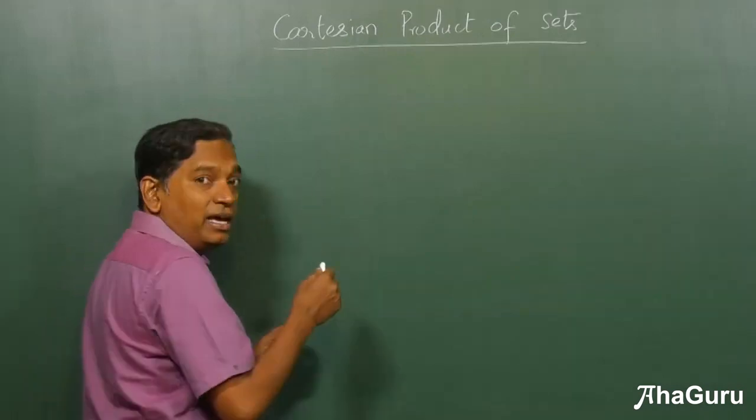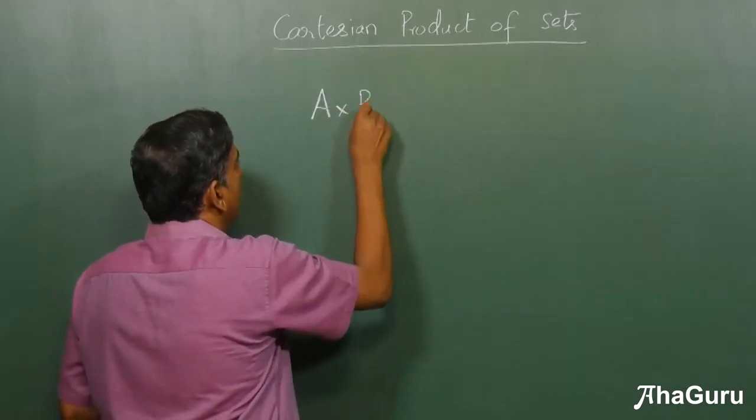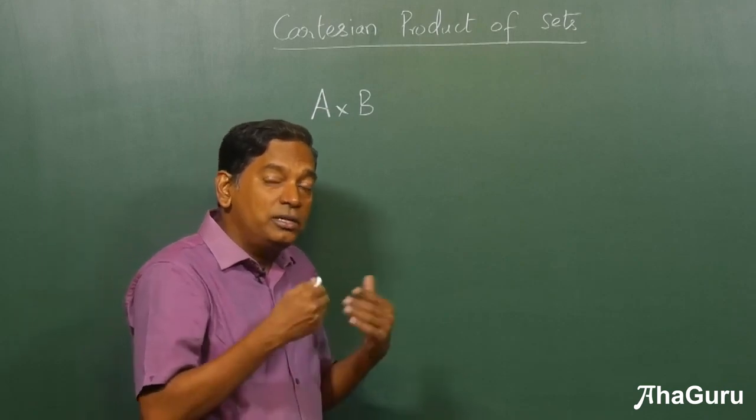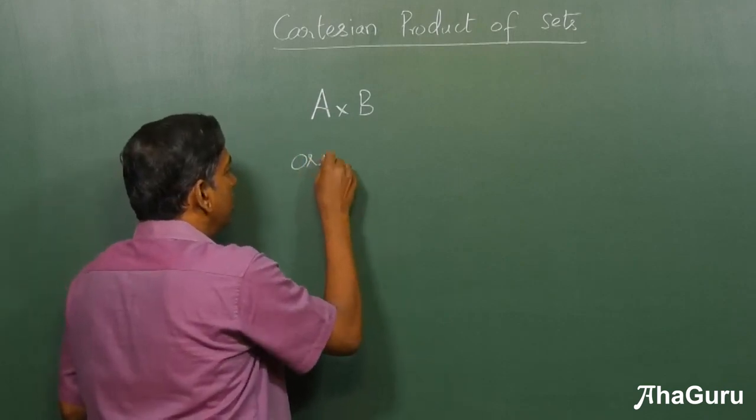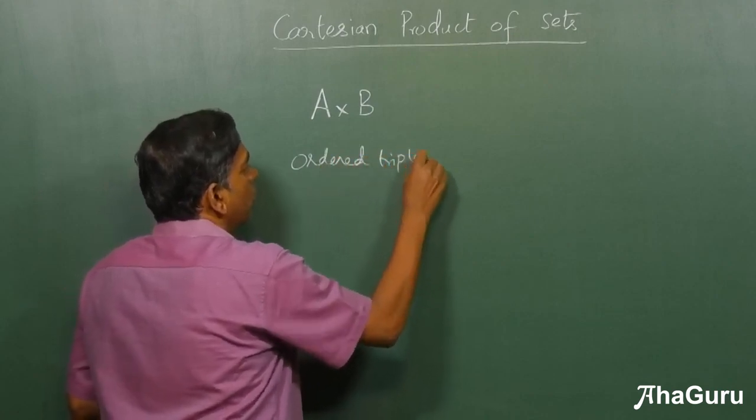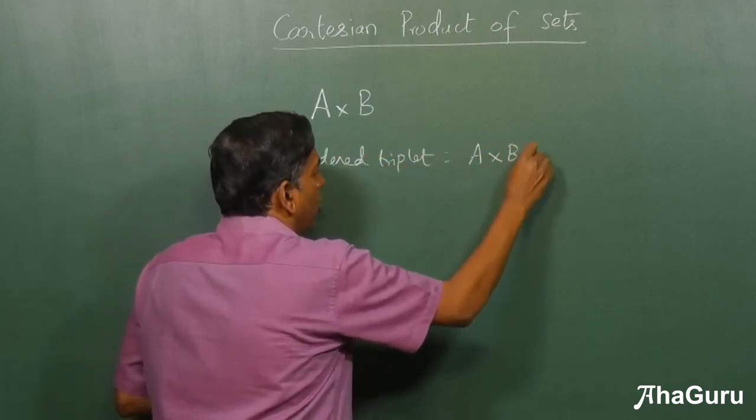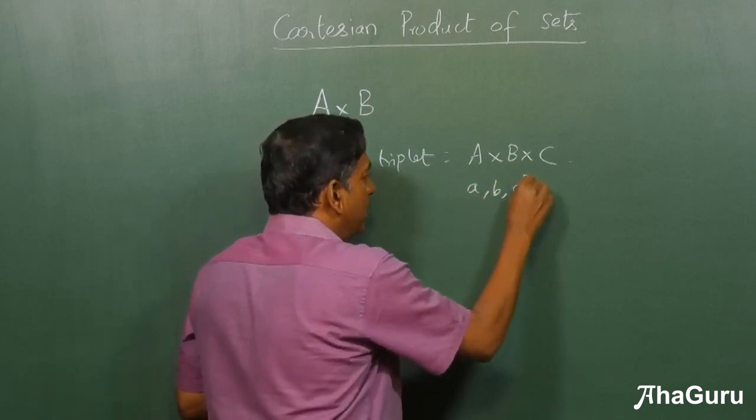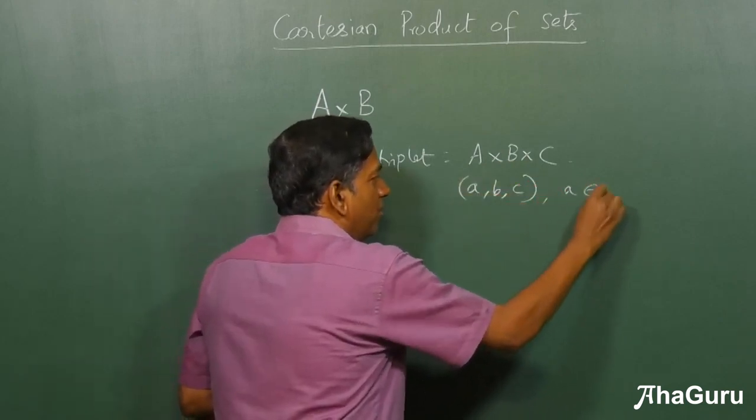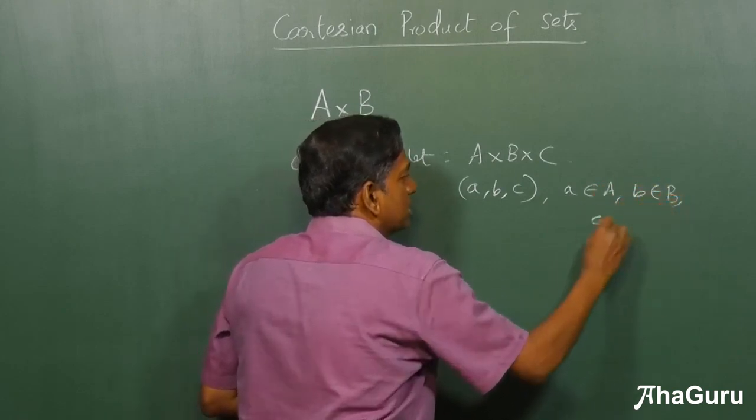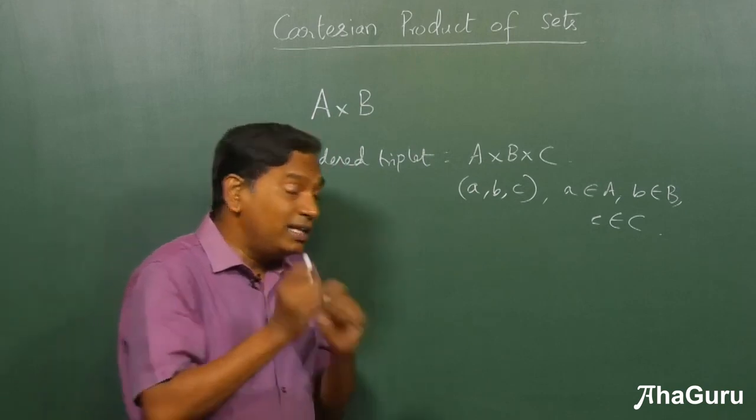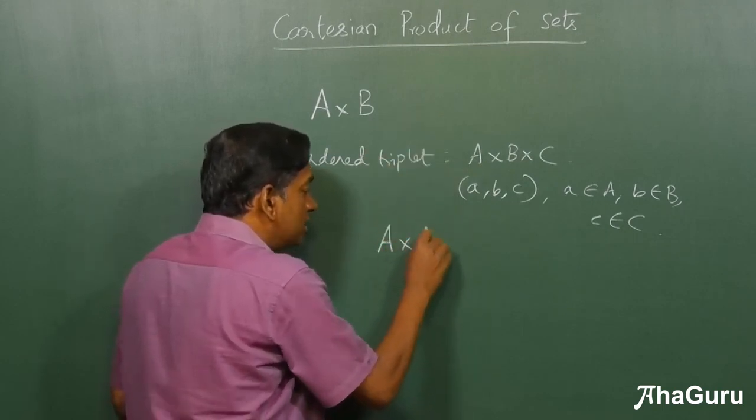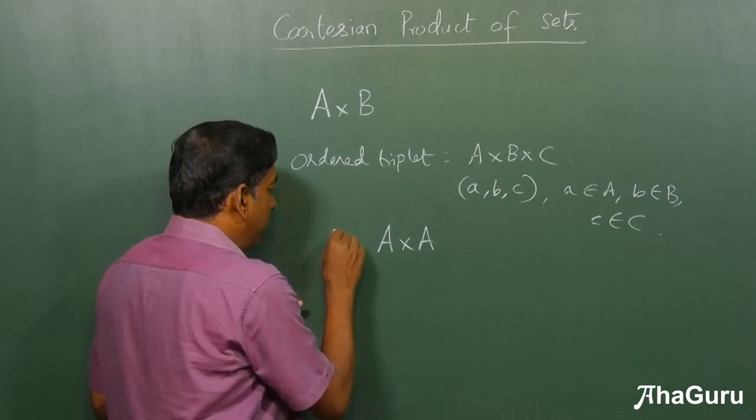We have seen how to define A cross B when A and B are 2 sets. We can extend this idea just like ordered pair. We can also have an ordered triplet, and define an idea called A cross B cross C, which means it will be an ordered triplet where elements will be of the form (a,b,c), where a belongs to A, b belongs to B, c belongs to C.